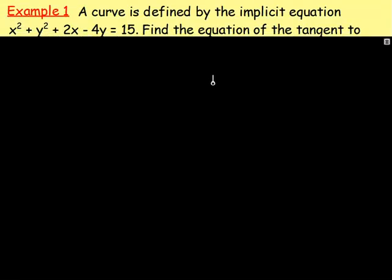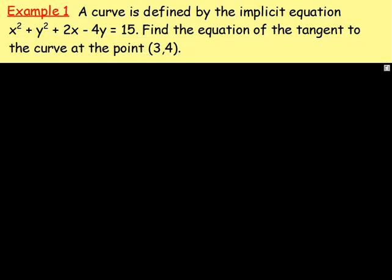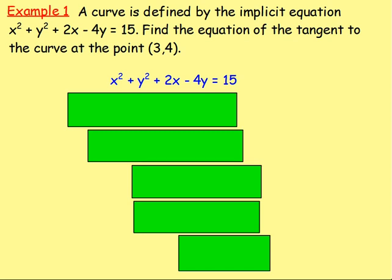Two examples. Example 1: a curve is defined by the implicit equation. Find the equation of the tangent to the curve at the point 3, 4. Using just what we went through, the way you would do it in higher maths, you want to do the exact same thing. Step 1, we want to differentiate. So, differentiating X squared plus Y squared plus 2X take away 4Y equals 15.